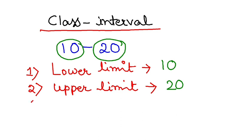The third one, this is important now, class mark. What is class mark? The mid value of the lower limit and the upper limit. So 10 and 20, the midpoint is obviously 15.